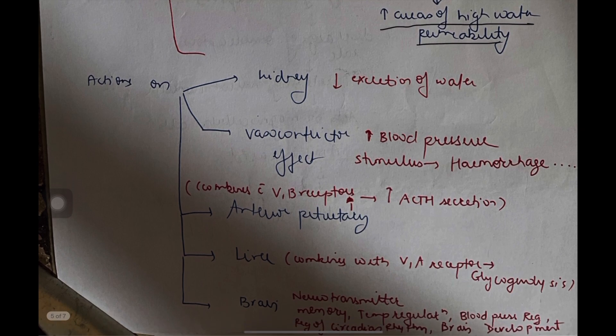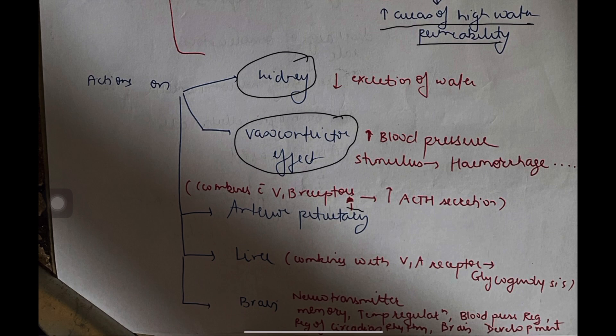Now let us see the actions of ADH on various organs. The headings are kidney, VC effect (vasoconstrictor effect), effect on anterior pituitary, effect on liver, and effect on brain.